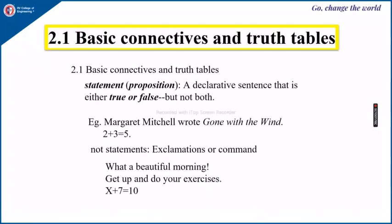Let us see some basic connectives and truth tables. First, let us see what is a proposition or a statement. A declarative sentence which is either true or false but not both is called a proposition or a statement. Example: Margaret Mitchell wrote Gone with the Wind. It would be either true or it would be false.